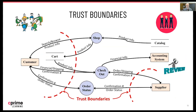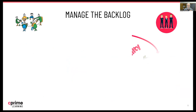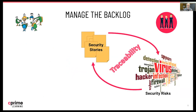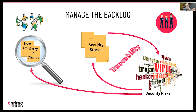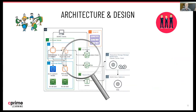They can also review our architectures and designs and help us understand where our trust boundaries are and where we need to have special focus on how we protect things as we move forward. They can help us manage our story backlog and essentially trace our security stories back to the security risks they are aimed at, and also help us manage change — because every time there's a new story, there could be security impacts. They can help us evaluate all those changes and stay on top of the security impacts so we're not opening up risks.